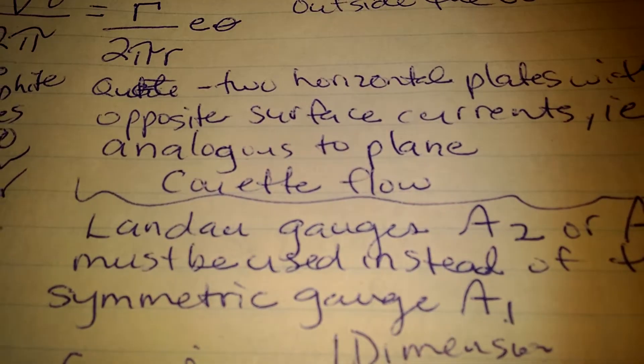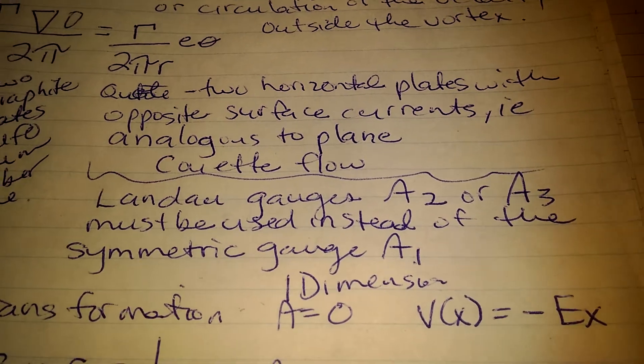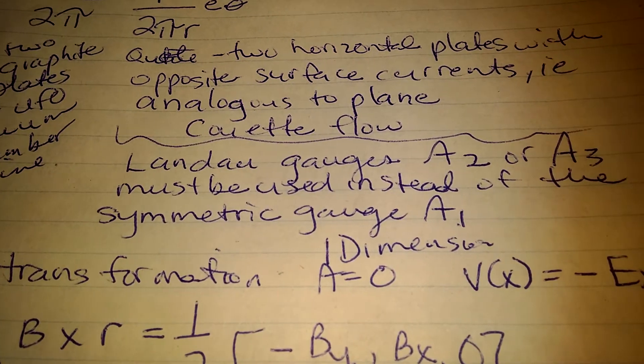And then we have the couette flow. Then you have the Landau gauges, a2 or a3, must be used instead of the symmetric gauge, a1.